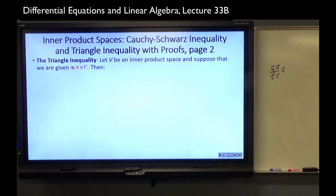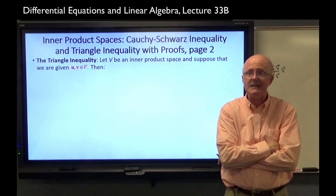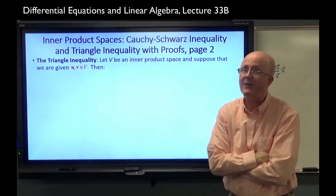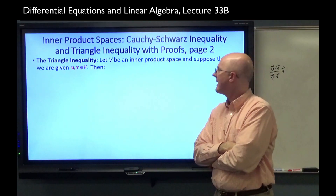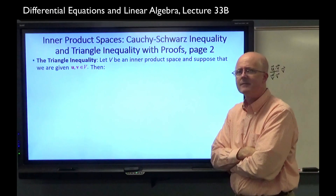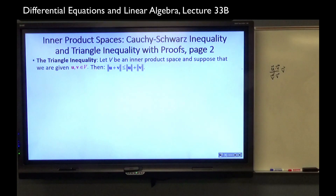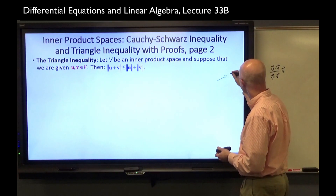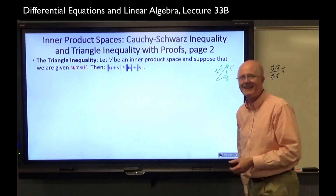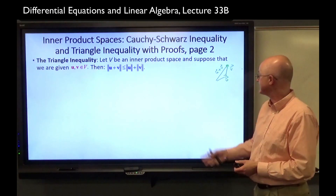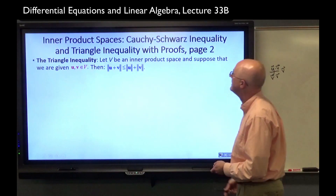The triangle inequality states that the magnitude of U plus V is less than or equal to the magnitude of U plus the magnitude of V. This makes sense if you draw pictures with ordinary vectors: there's U, here's V, there's U plus V — the length of that side is less than or equal to the sum of the lengths of the other two sides. It doesn't have to be an actual triangle.